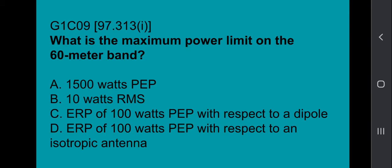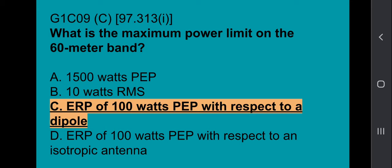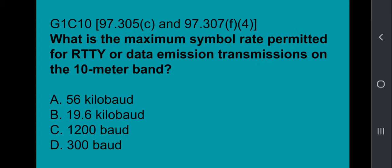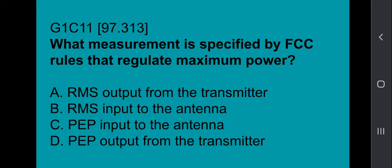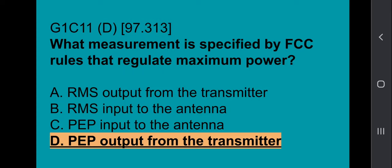G1C09: What is the maximum symbol rate on the 60-meter band? That's going to be an ERP of 100 watts PEP with respect to a dipole. G1C10: What is the maximum symbol rate permitted for RTTY or data emission transmissions on the 10-meter band? That's 1200 baud. G1C11: What measurement is specified by FCC rules that regulate maximum power? That's PEP output from the transmitter.